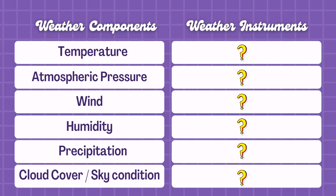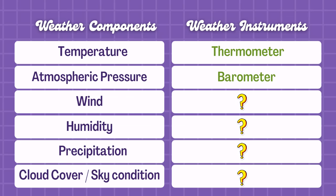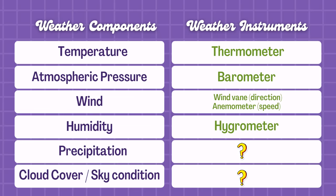In summary, here are the weather components and the corresponding weather instruments used to measure them. To measure temperature, we use a thermometer. To measure atmospheric pressure, we use a barometer. To measure wind direction, we use a wind vane. For wind speed, we use an anemometer. To measure humidity, we use a hygrometer. To measure precipitation, we use a rain gauge. As additional information, for cloud cover or sky condition, meteorologists use a ceilometer — a device for measuring the height of cloud bases and overall cloud thickness.